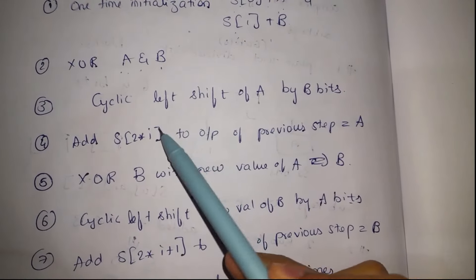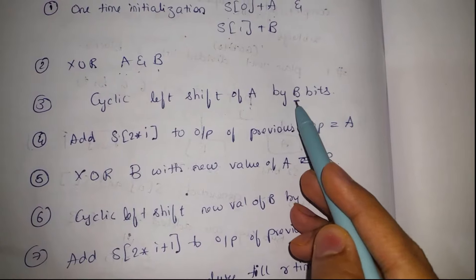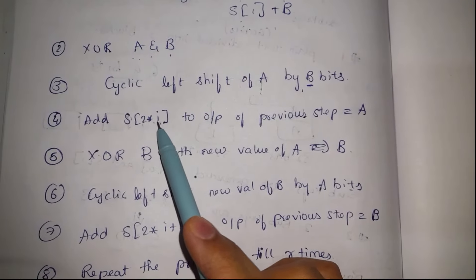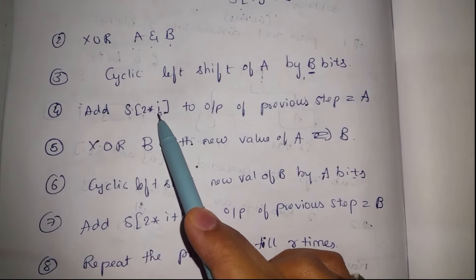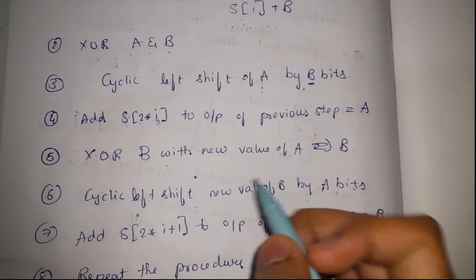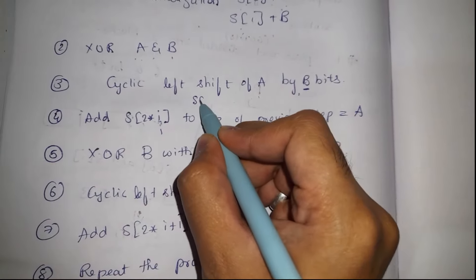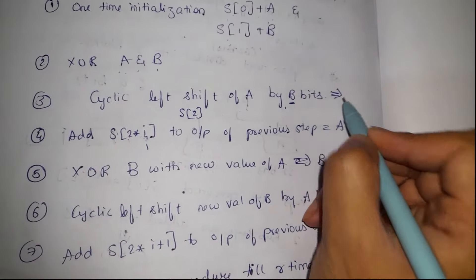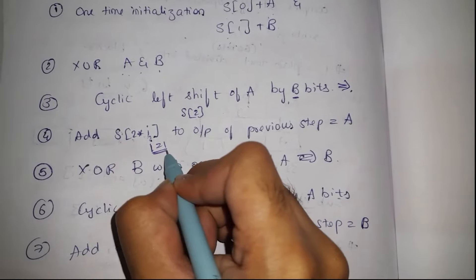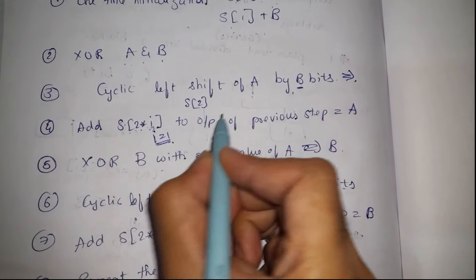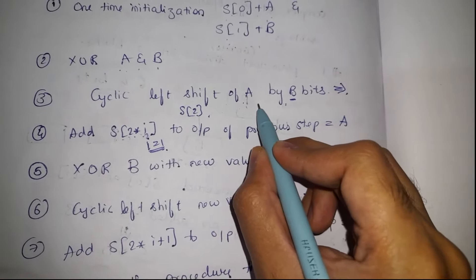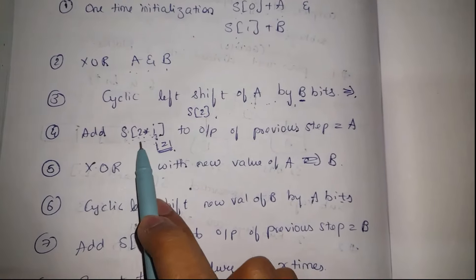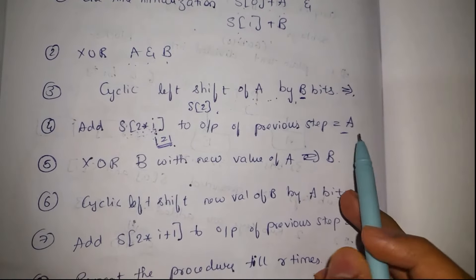We perform a cyclic left shift of a by b number of bits. Then we add S[2i] — where i is the current round number — meaning we add the sub-key corresponding to this particular round. For round i equal to 1, S[2] is added to the output after performing the cyclic left shift operation. After adding this sub-key, we get the new value of a.